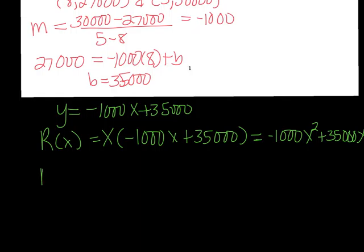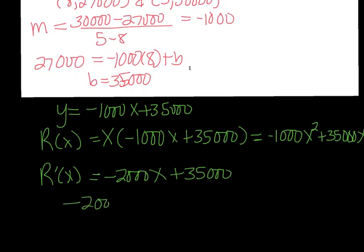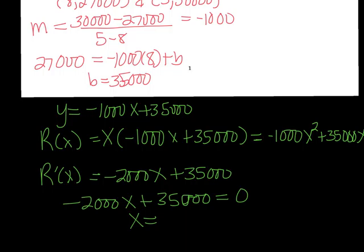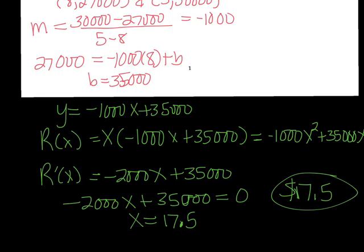Taking the derivative of the revenue function gives R'(x) = −2000x + 35000. Setting that equal to zero and solving gives x = 17.5. So charging $17.50 per ticket will maximize revenue for the baseball team.